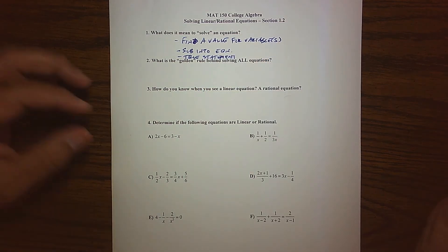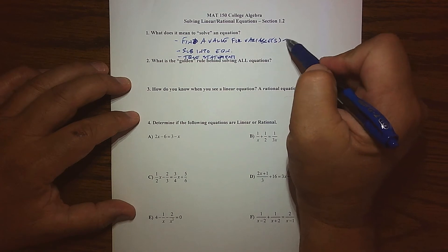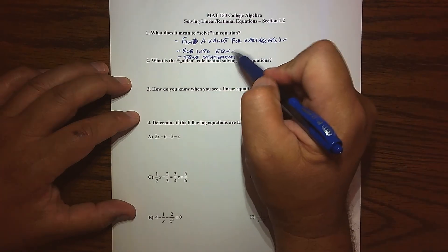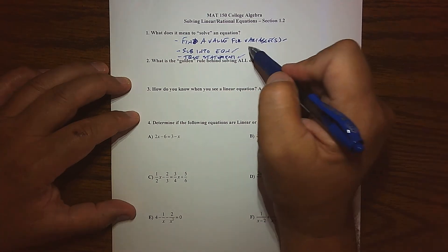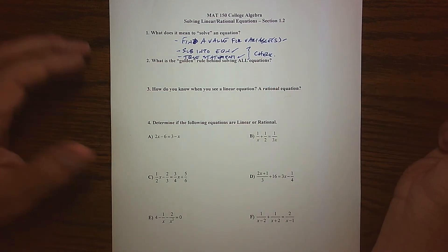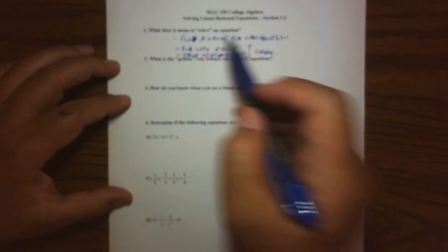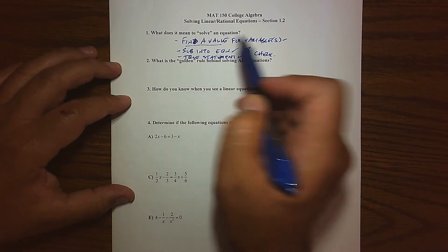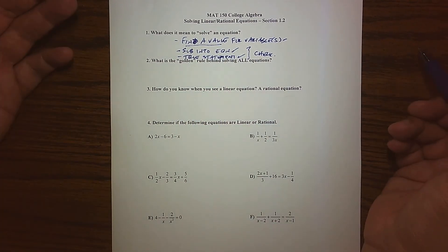A lot of math is built on that basic idea. So it starts by finding a value, and then we sub it in and get a true statement. This actually results in a way to actually check to see if we have what I have in terms of a value, if it's actually true.